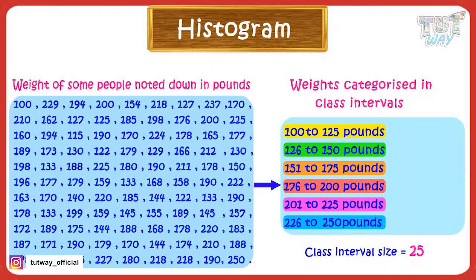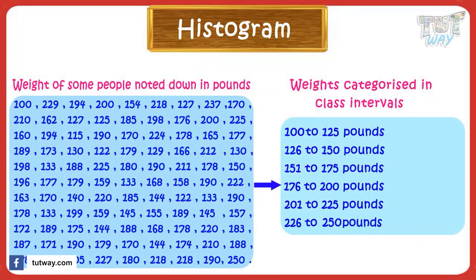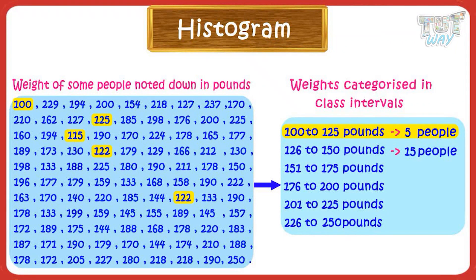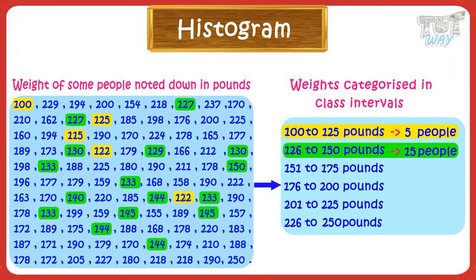Then we calculate how many people have a weight in each class interval. For example, 5 people have weights in the range of 100 to 125 pounds, 15 people have weights in the range of 126 to 150 pounds, and so on.